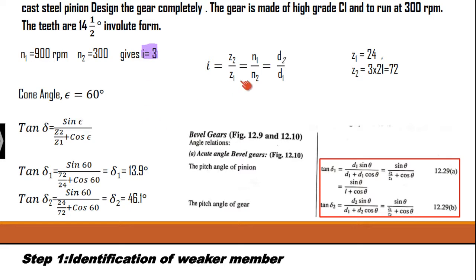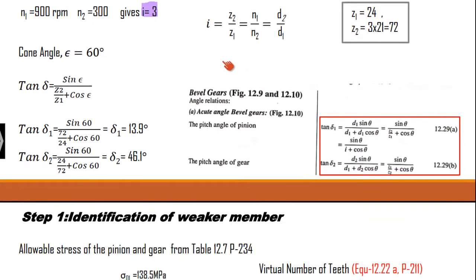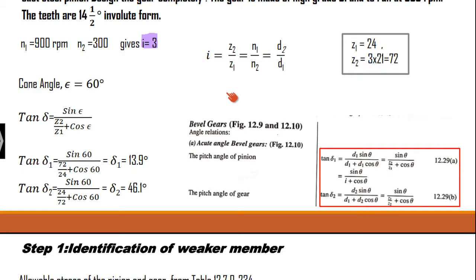Using the gear ratio, z2 can also be calculated and it is found to be 72 number of teeth. So we have 72 number of teeth for z2. Our next aim is to find out the value of deltas. Delta is required to find out the formative number of teeth of the bevel gear, which is the number of teeth on the equivalent spur gear.